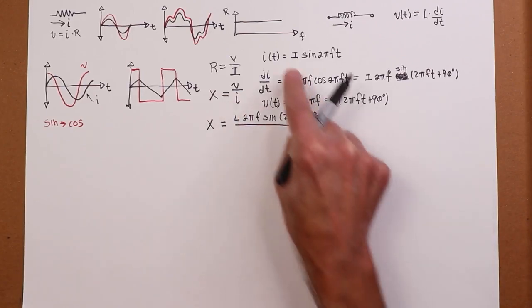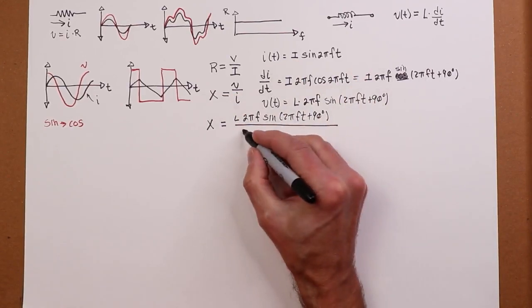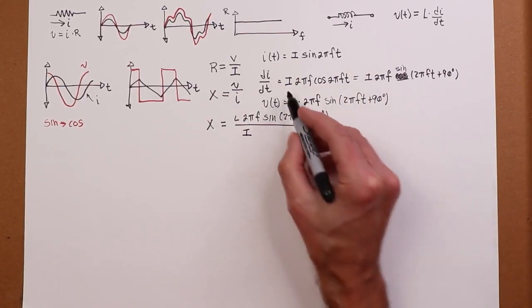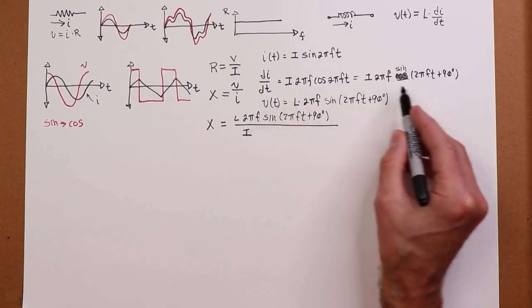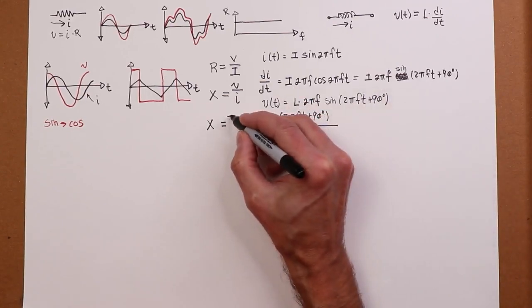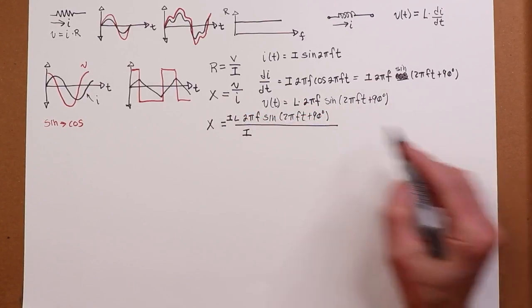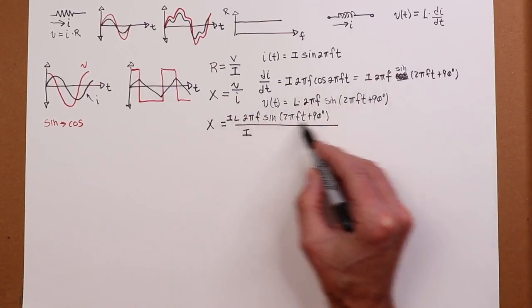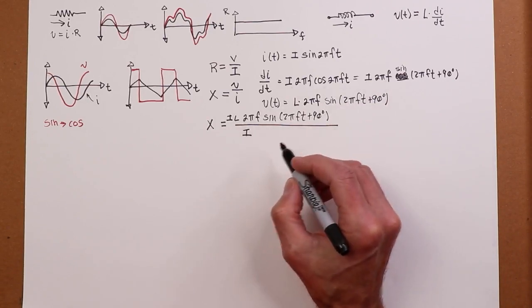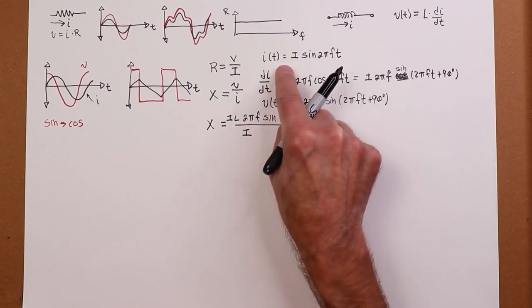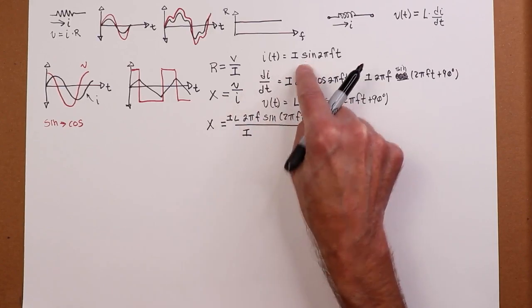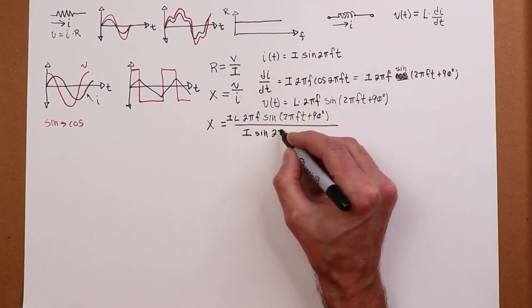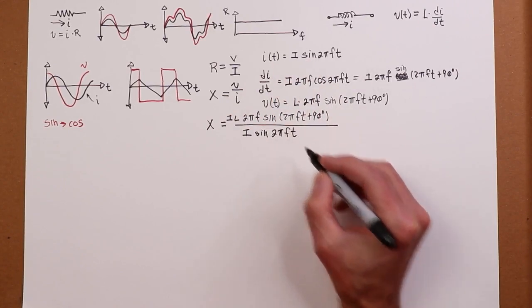In other words, it's L times 2 pi F sine 2 pi Ft plus my 90 degrees. Well, the current is I. Oops. I forgot my I. I forgot to carry through my I over here. I'm going to throw that in here. Sorry. All right. There's the I. And then I forgot to transpose it down here. Two errors, human.